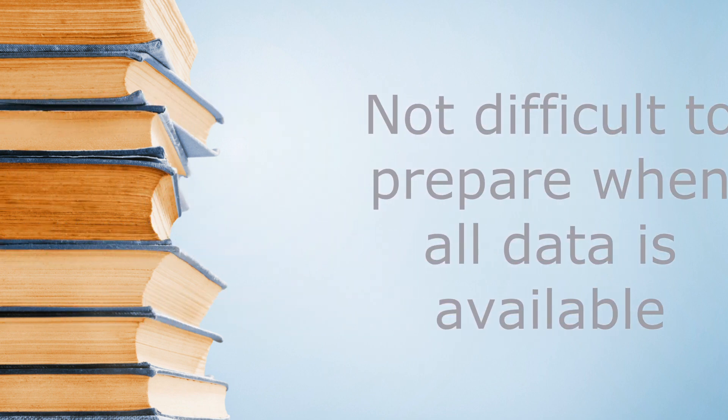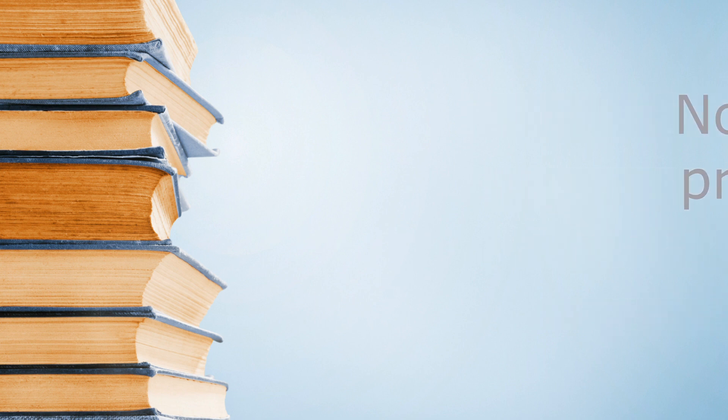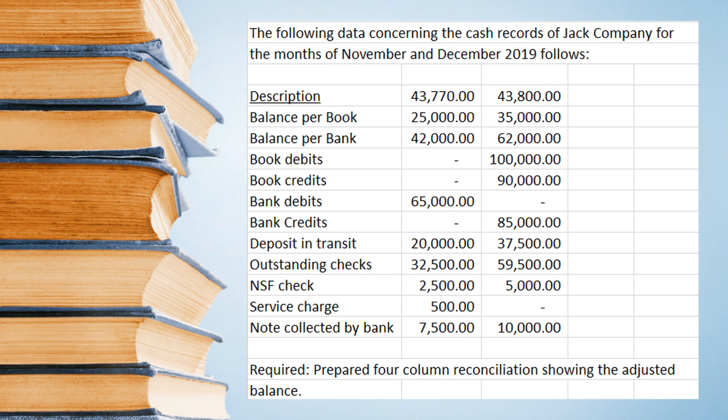Let me illustrate how to prepare proof of cash using the adjusted balance method, using the sample problem for Jack Company. Before we start preparing the proof of cash, it is very important that you should be able to identify what are the book reconciling items and bank reconciling items. If you are not familiar with those, I suggest watching my video on bank reconciliation first — just click on the link below. So let us start by marking book and bank reconciling items to save time.